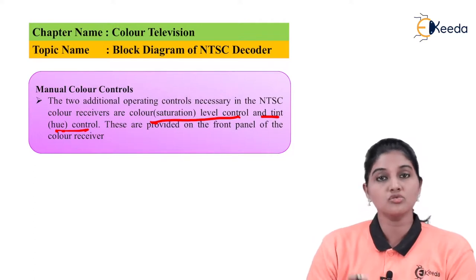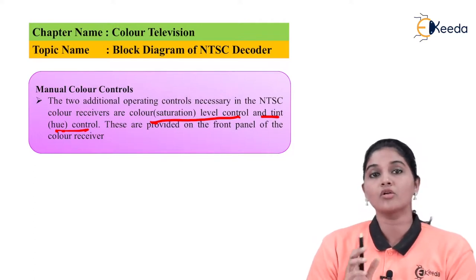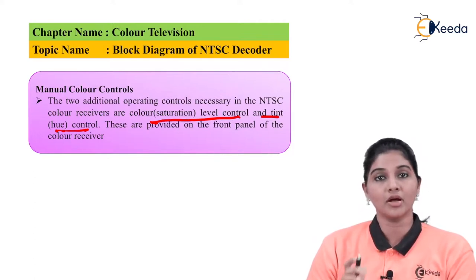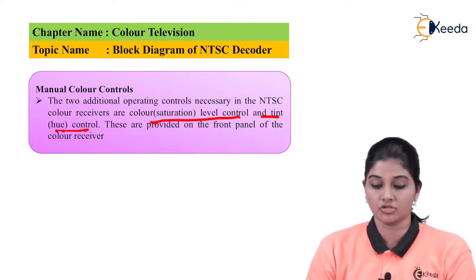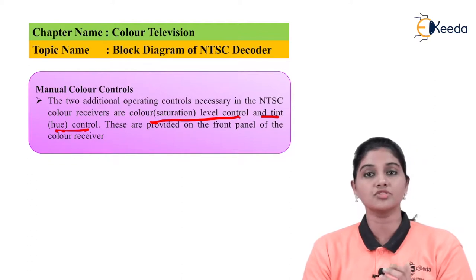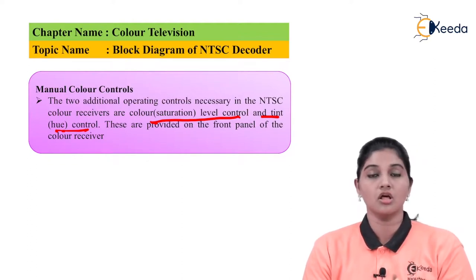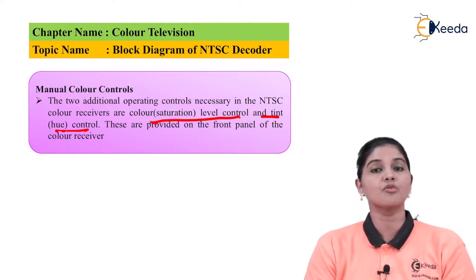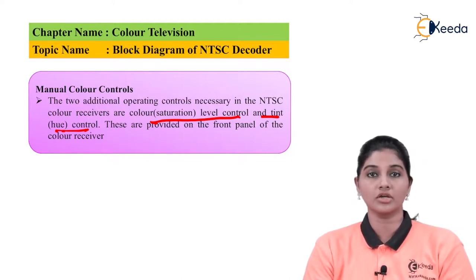So hue and saturation together provide the chromaticity, or colorfulness, of the signal. These two controls are required to be provided by the manual control circuit. These are the various circuits present in the NTSC decoder. Now let's move back to the block diagram and summarize the working of the NTSC decoder.